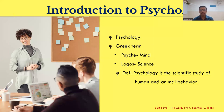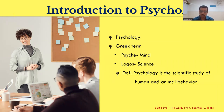To start with, the word psychology is originated from two Greek terms: psyche and logos. Psyche means mind and logos means science. So the scientific study of mind is what psychology is. A concise definition: psychology is the scientific study of human and animal behavior.